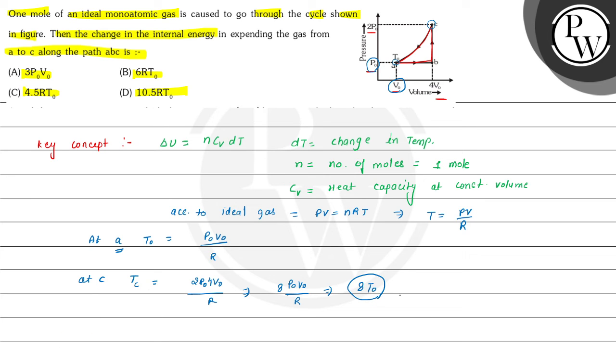Now, we can substitute the values in this formula so that del U is equals to N is equals to 1 multiplied by Cv.